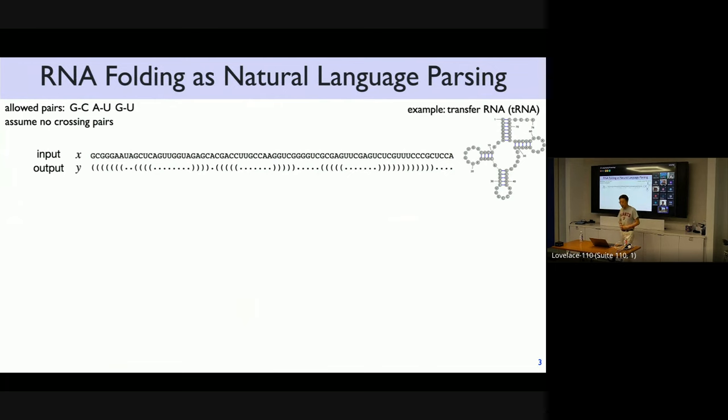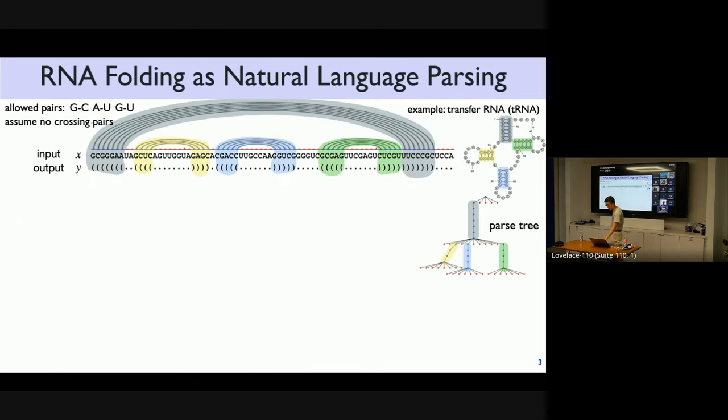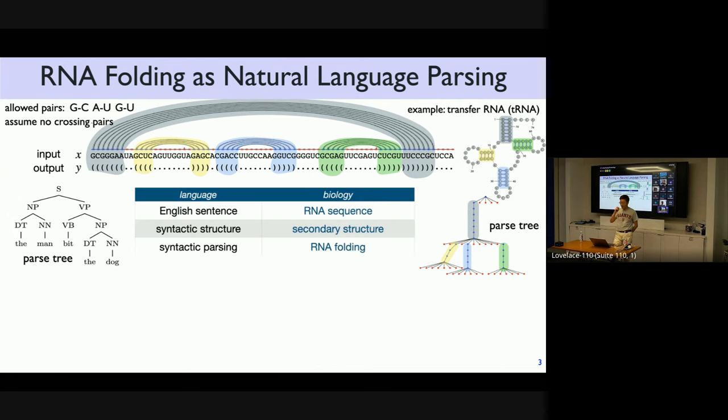First, some background. Why RNA folding can be viewed as natural language parsing? Well, the input is just a sentence, which is ACGU sequence. And Y is the syntactic structure, or the bracketing structure, like the corresponding brackets pair. So you fold into this kind of structure. And this structure is very much just a parse tree. It's very recursive and hierarchical, and it can be modeled by a context-free grammar, just like we had in English parse trees.